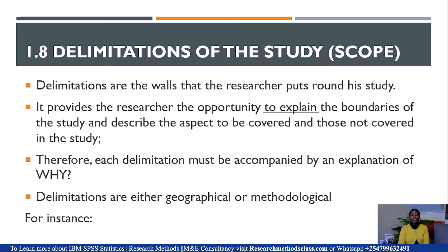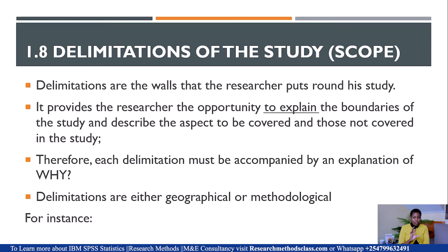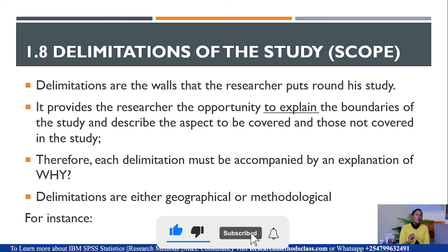Then we move to Section 1.8, which is on delimitations of the study — some institutions write it as the scope of the study. Some students confuse delimitations and limitations, but these two terms are not related at all. Delimitations means the walls that the researcher puts around their study. Delimitation provides the researcher with an opportunity to explain the boundaries of the study — that is, what aspects of my study will I cover and what am I not covering? Each delimitation must be accompanied by an explanation of why.